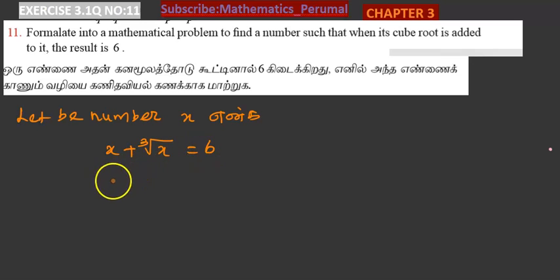Okay, now let's go to mathematical sum. X and cube root of x, so now cube root of x equal to 6 minus x. Okay, power 3 cube, so taking